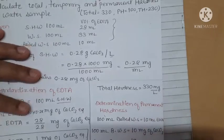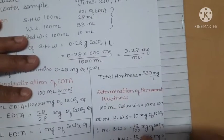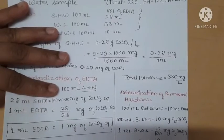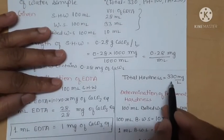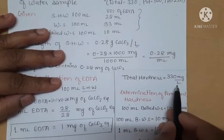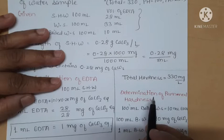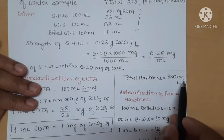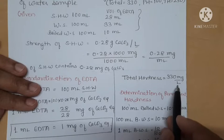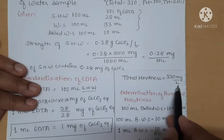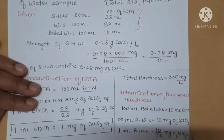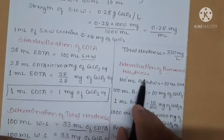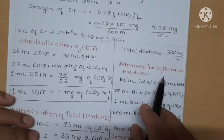Since hardness is defined as the number of mg of CaCO3 present in 1 liter of water, 330 mg of CaCO3 per liter is the total hardness of the given water sample.